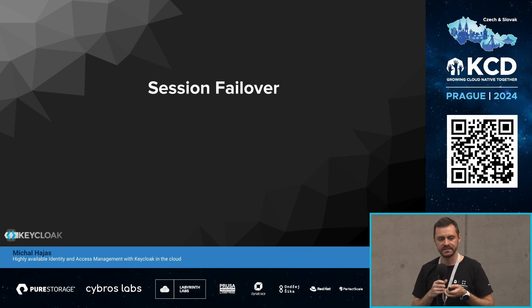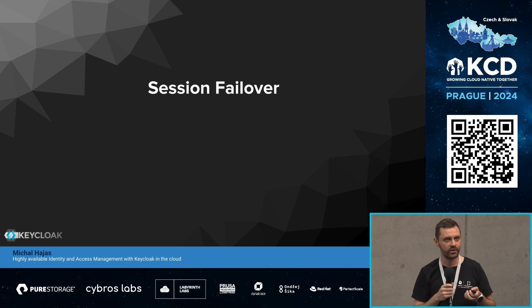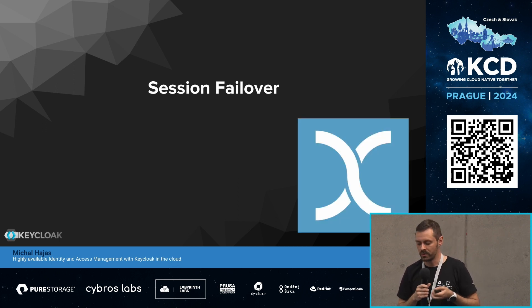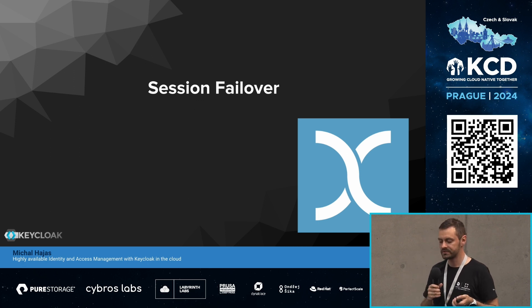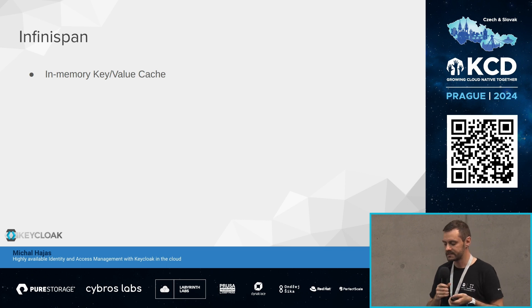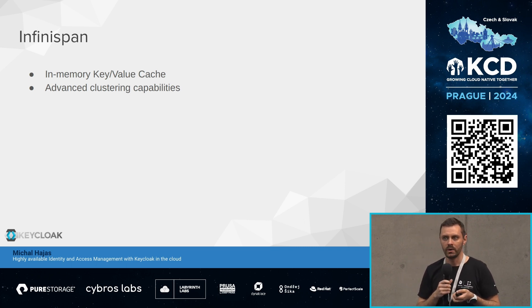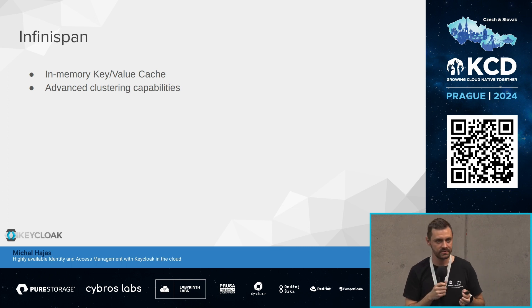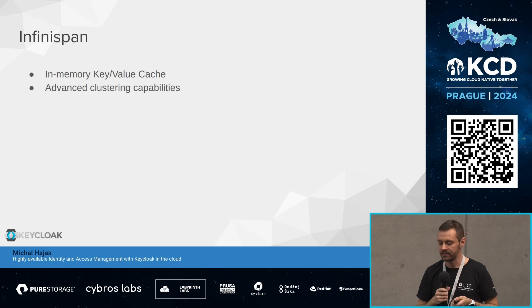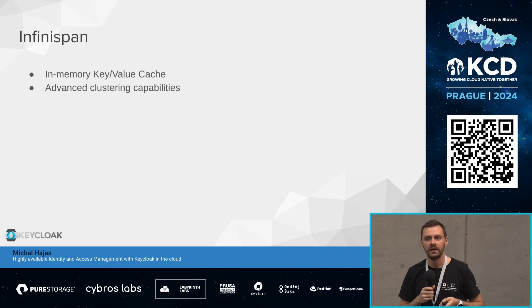The second issue to solve was session failover — the trickiest part, because session data is frequently accessed and therefore read and write heavy. For that, we chose Infinispan, which we had been using for a long time. Infinispan is an in-memory key-value cache store with advanced clustering capabilities. When storing a piece of session data in Infinispan, it ensures that data is stored in at least two Keycloak nodes, making us resilient to pod failure. We don't need to handle this ourselves — we just put things into Infinispan and it's taken care of. Infinispan also provides a Kubernetes operator and is an open-source project.